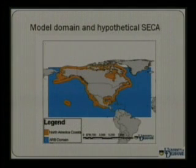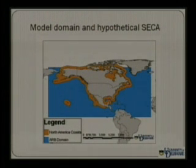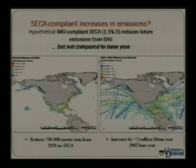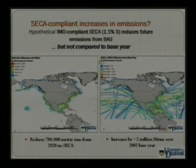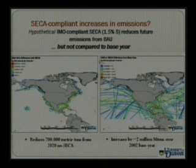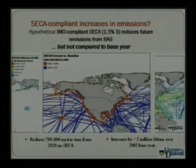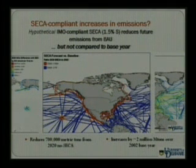This was our hypothetical domain for the Sulfur Emission Control Area. We did it arbitrarily using a 200 nautical mile buffer, which will slightly differ depending on how you interpret international law for where the EEZ needs to be. We show that there are reductions in the future of about 700,000 metric tons with a SECA in those zones, but compared to the baseline there's still an increase — about one and a half times instead of 2.8 times, depending upon whether you do or do not have an IMO-compliant SECA.